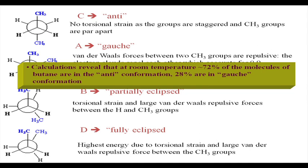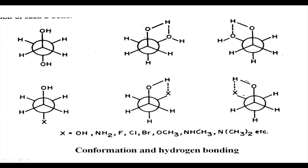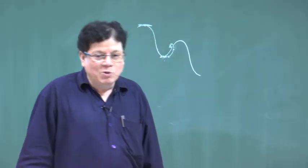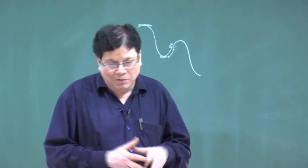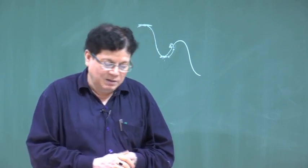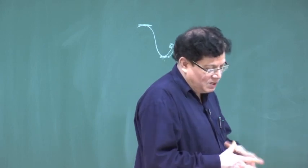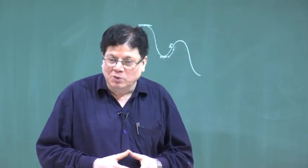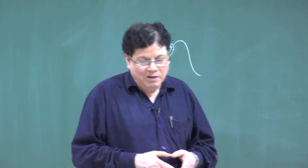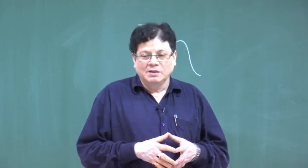Calculations and spectroscopic measurements show that about 72 percent of n-butane molecules are in the anti conformation and 28 percent are in the gauche conformation. It is not always true that the anti form is the most stable. Sometimes the gauche form becomes stable due to other reasons.